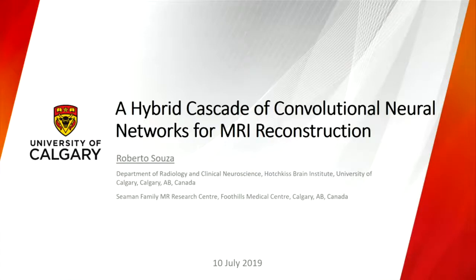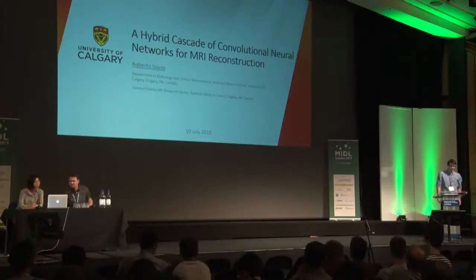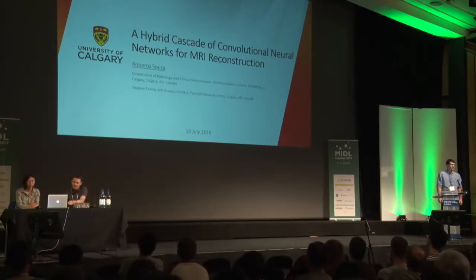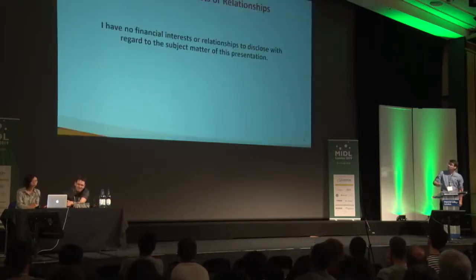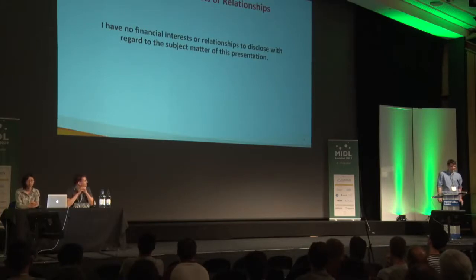This is the paper titled 'A Hybrid Dual Domain Cascade of Convolutional Neural Networks for Magnetic Resonance Image Reconstruction,' presented by Roberto Sousa. Good morning, my name is Roberto Sousa. I'm a postdoc at the University of Calgary. The title of my work is 'A Hybrid Cascade of Convolutional Neural Networks for MRI Reconstruction.' I have nothing to disclose other than being a little afraid to speak in public.